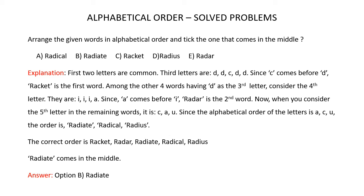When you arrange the given words in alphabetical order, the correct order is Racket, Radar, Radiate, Radical, and Radius. So clearly Radiate comes in the middle. The correct answer is option B, Radiate.